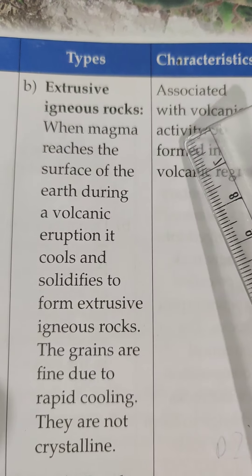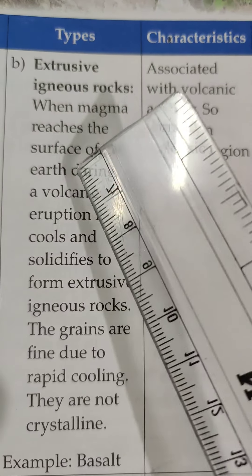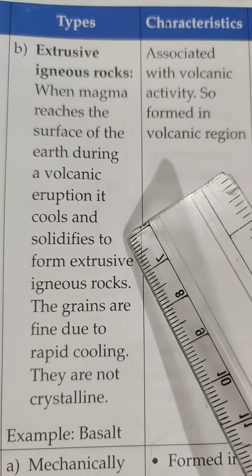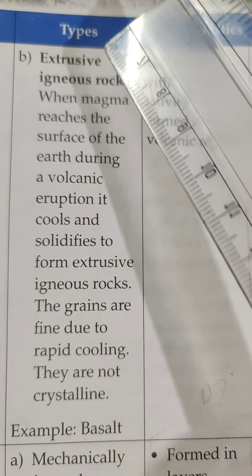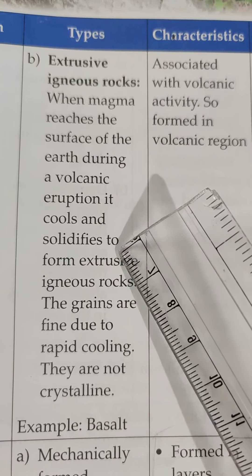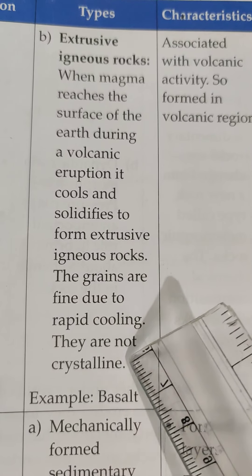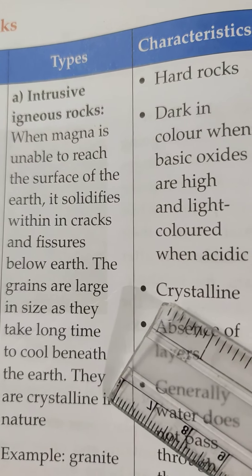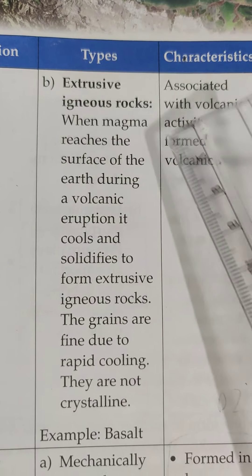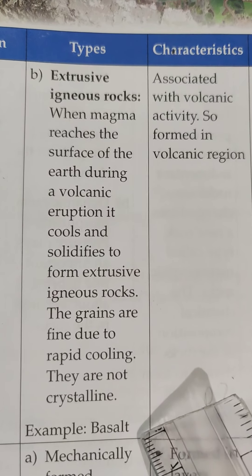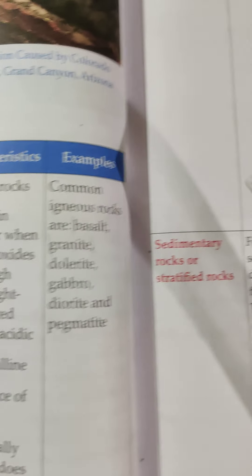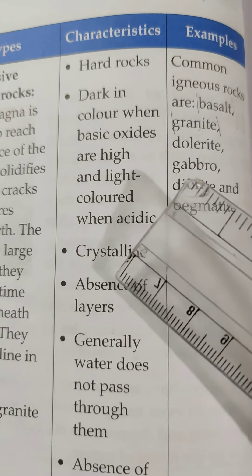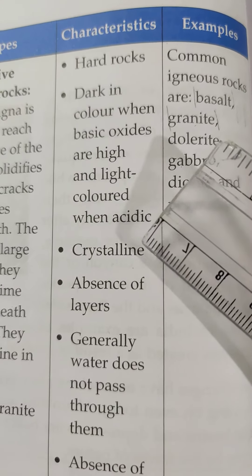Extrusive igneous rocks are formed when magma reaches the surface of the earth during a volcanic eruption and cools and solidifies. These are not crystalline in nature, whereas intrusive igneous rocks are crystalline in nature. Extrusive igneous rocks are hard rocks, dark in color, and sometimes crystalline and sometimes not crystalline.